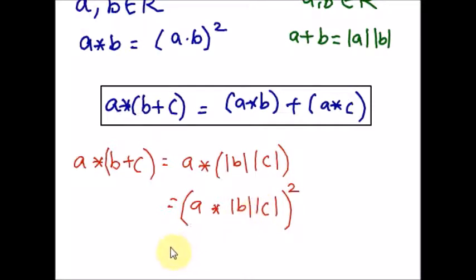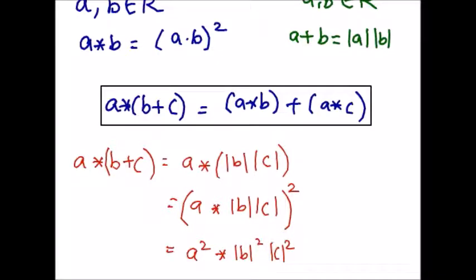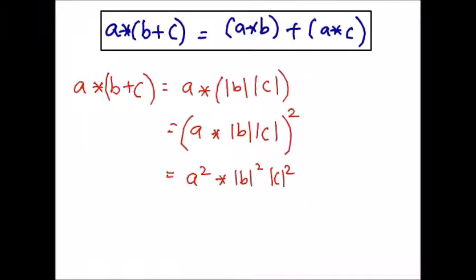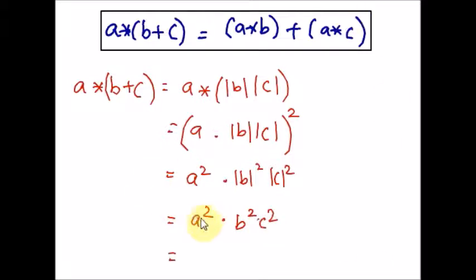So the left side gives us A² · B² · C². Now let us check the right side of the property and see whether we are getting the same thing.